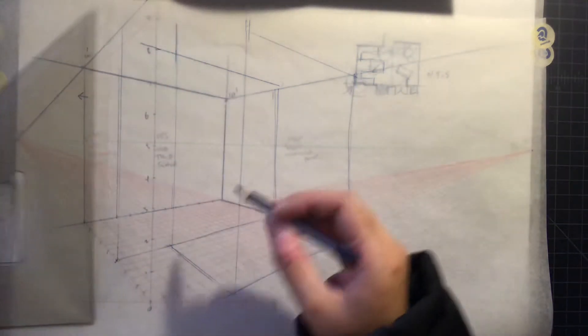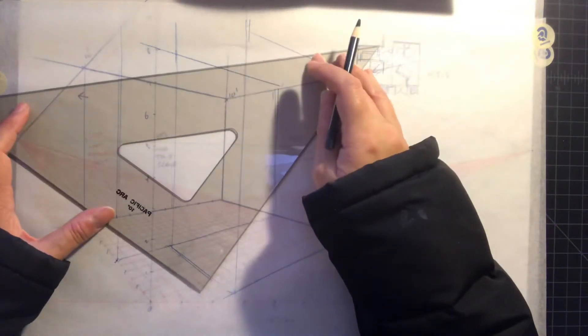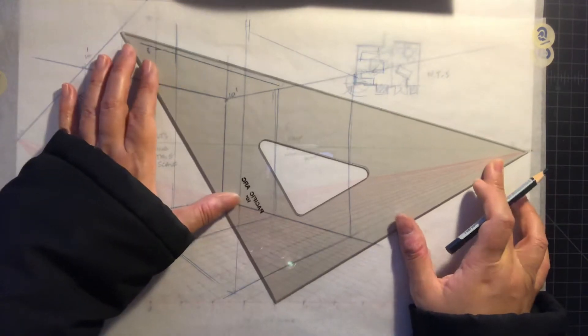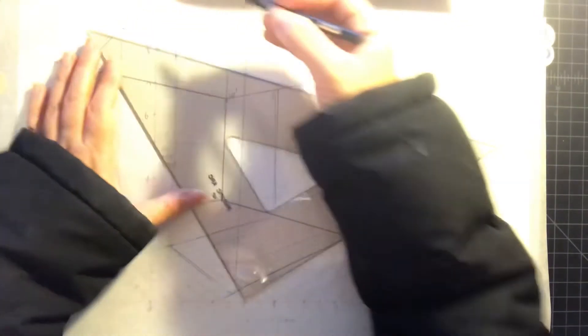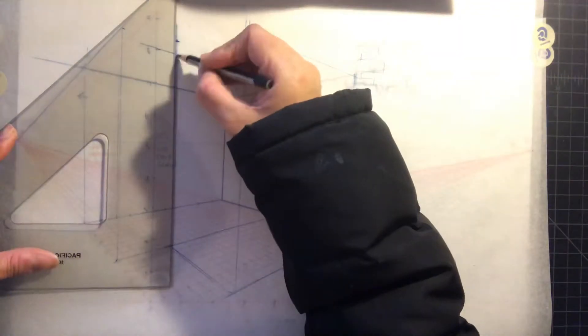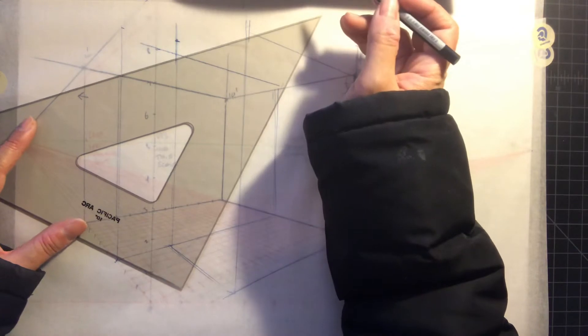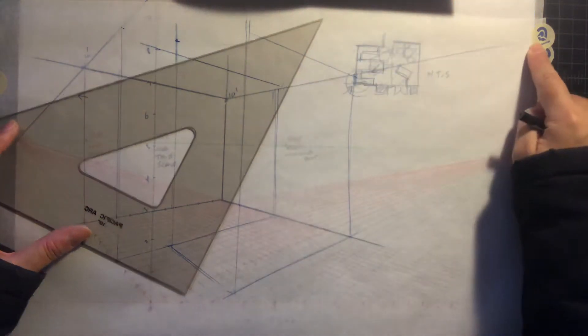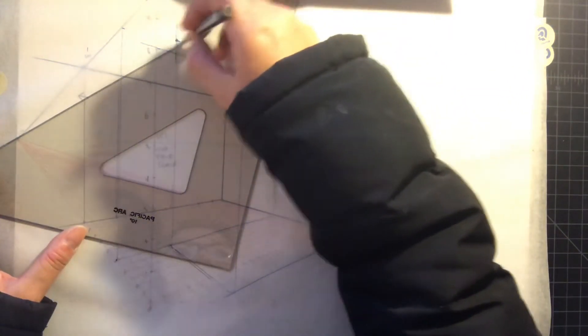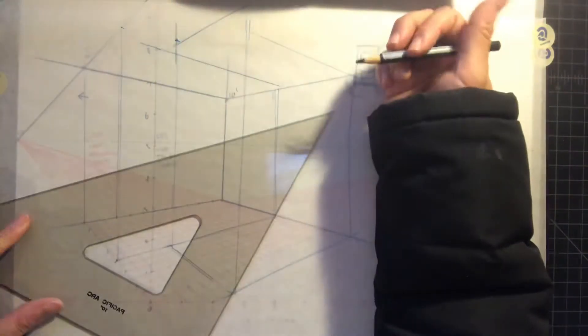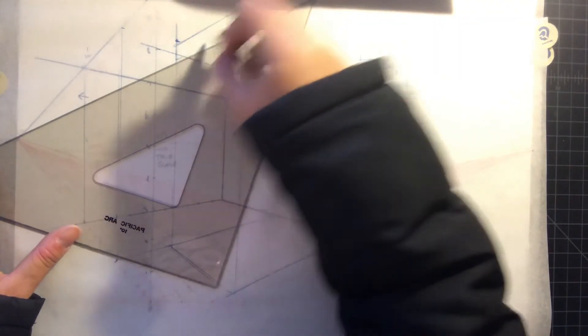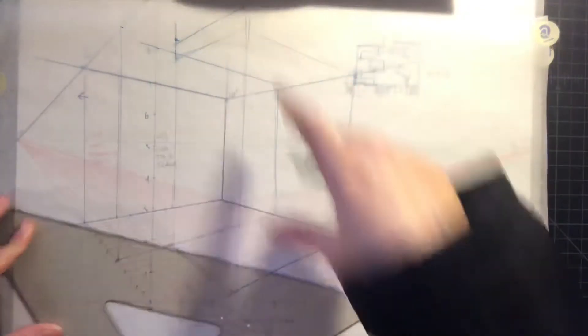And let's say that point right there to here, so that's the other point that you could pull to the vanishing point here. It's gonna look pretty extreme angle because it's a pretty tall ceiling.